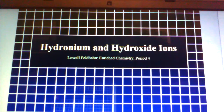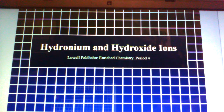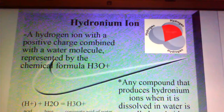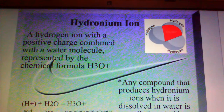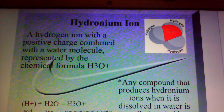In this video, I will be teaching you about hydronium and hydroxide ions. A hydronium ion is a hydrogen ion with a positive charge combined with a water molecule, represented by the chemical formula H3O+. Any compound that produces hydronium ions when it is dissolved in water is referred to as an acid.